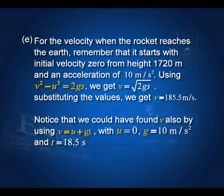For the final velocity when the rocket hits the ground, we use v² − u² = 2gs with s = 1720 m, u = 0, g = 10 m/s². This gives v = 185.5 m/s.